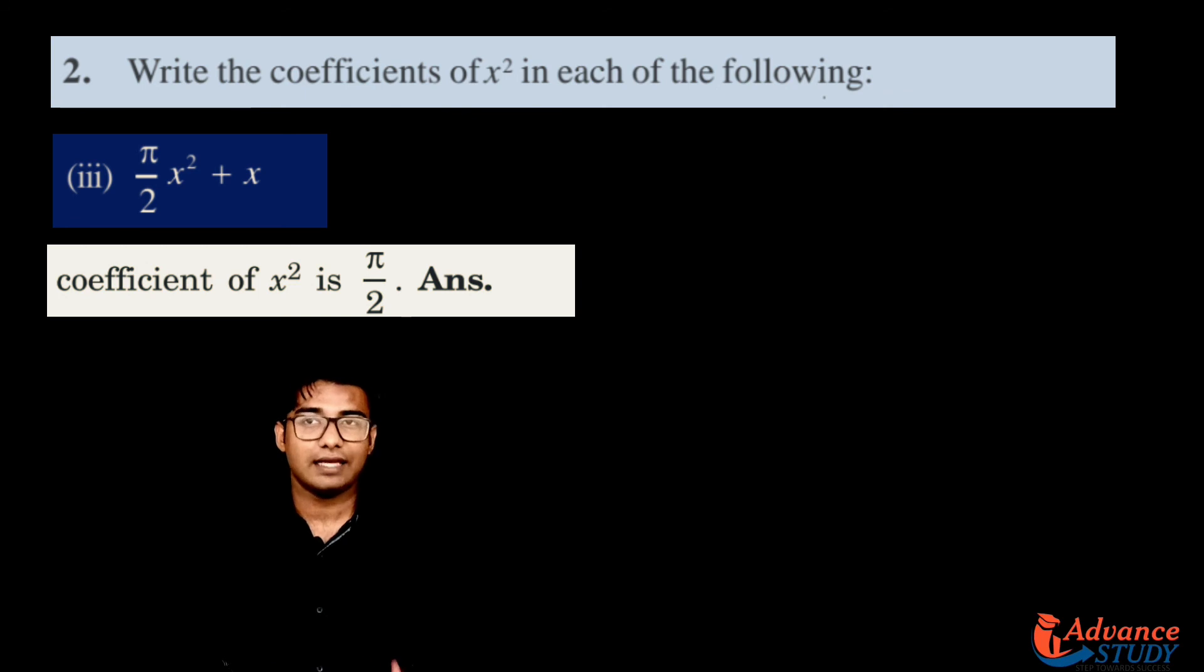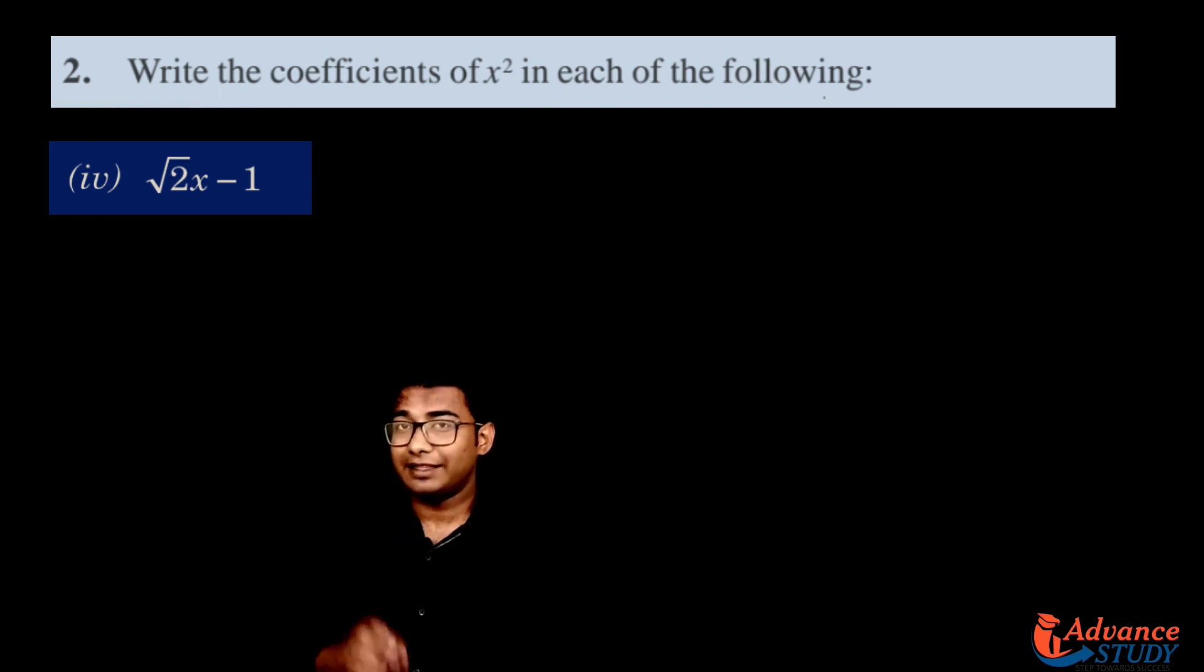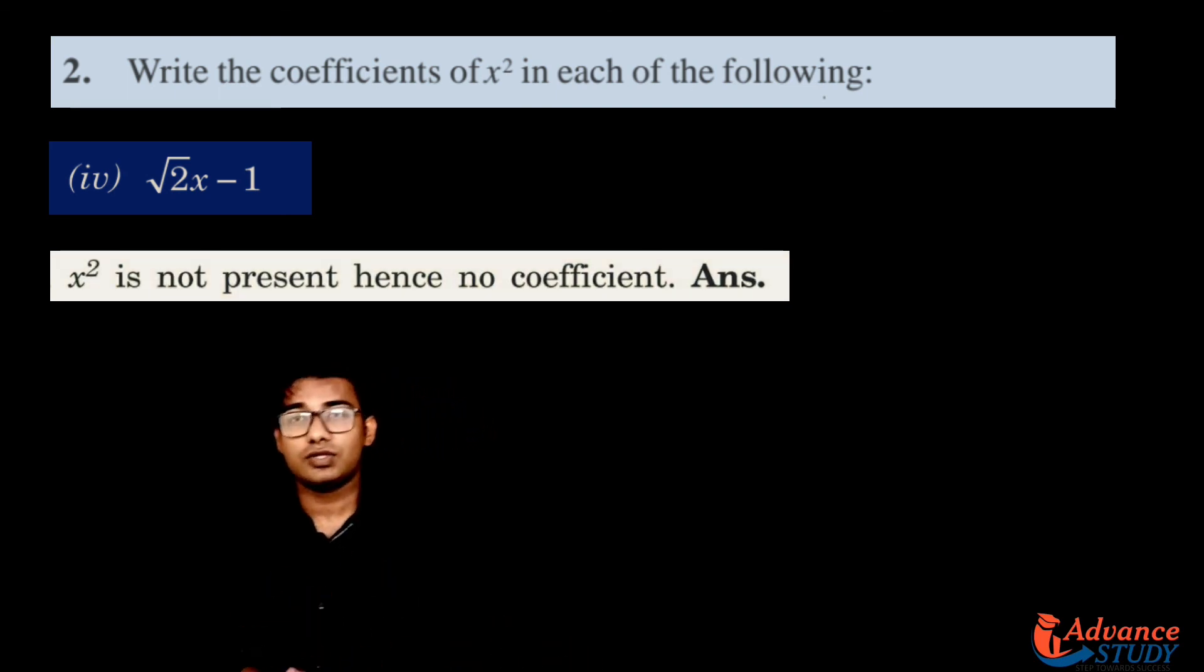Next: √2x minus 1. What is the coefficient of x² in this question? There is no x², so x² is not present, hence no coefficient. Or you can say that 0 is also the coefficient of x².